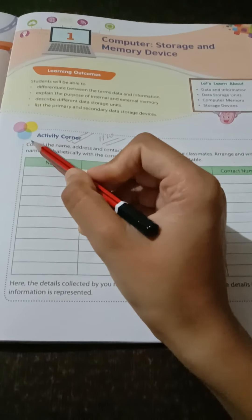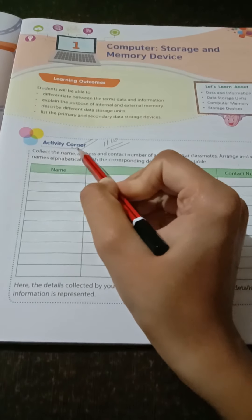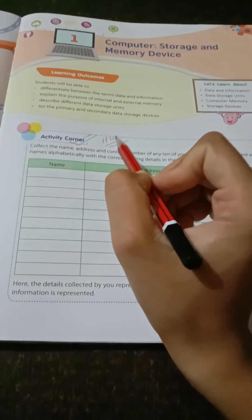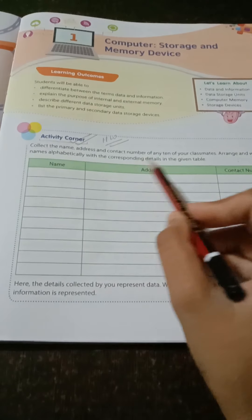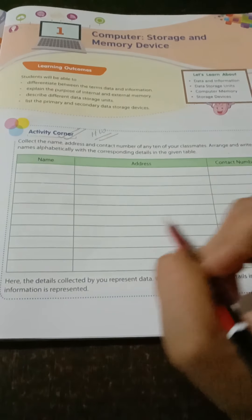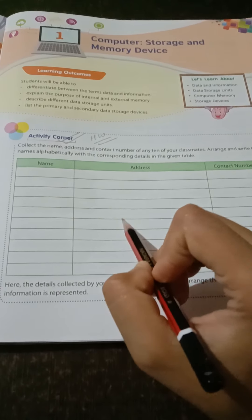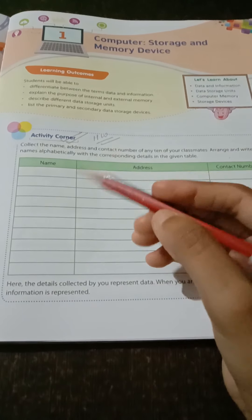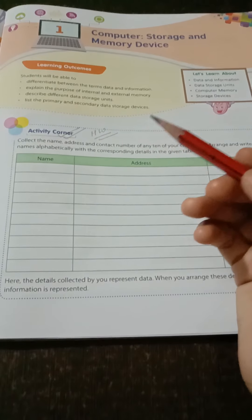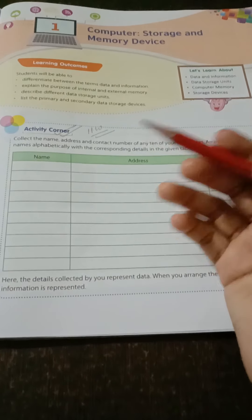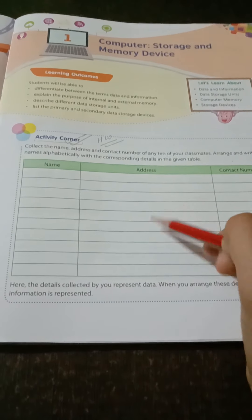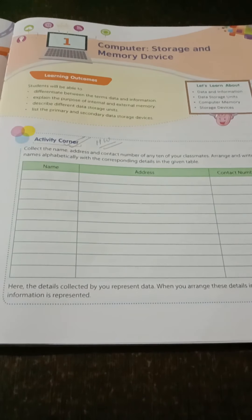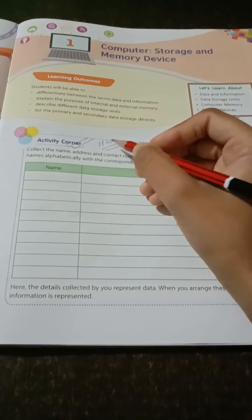This activity is given to you all. You have to do it as homework. You have to collect some data or information from your neighbors, any family members, or any person who is staying as a tenant in your house. Write down their names, address, and contact number. I hope you will do this homework.